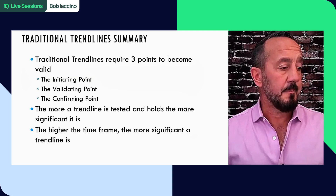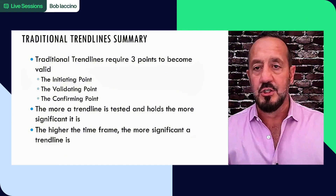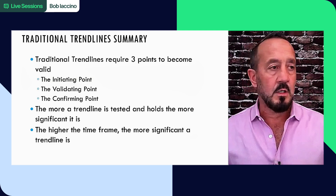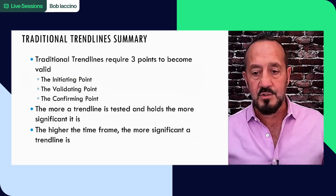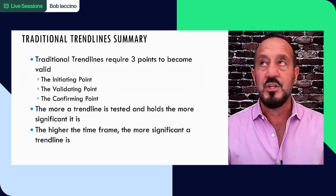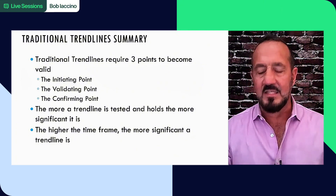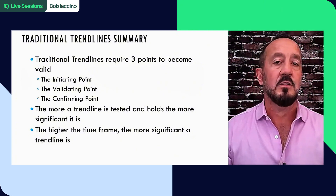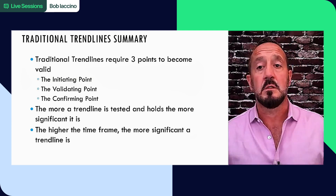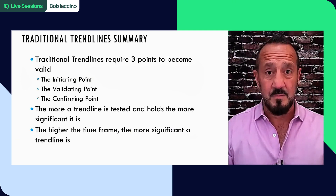Trend lines for people is often uninteresting. But one of the reasons we teach traditional trend lines is because a lot of traders go into Reddit forums or Discord server conversations. And someone will say, we just broke this trend line. You'll be able to look at that and - I would not advise that you tell the person that's not a valid trend line - but you'll be able to look at it and say, this matters or this doesn't. That's part of the reason we teach it.